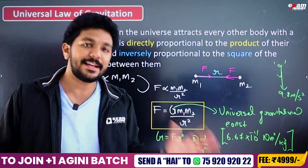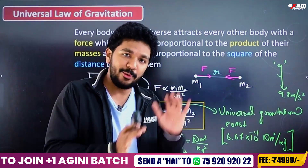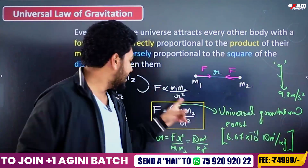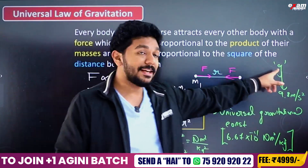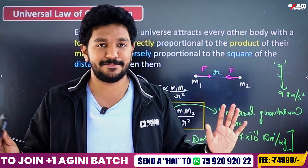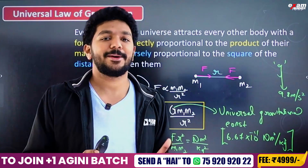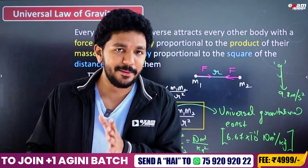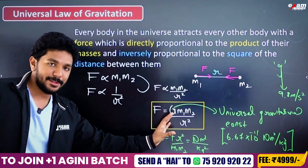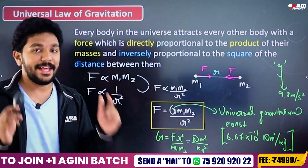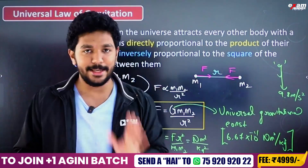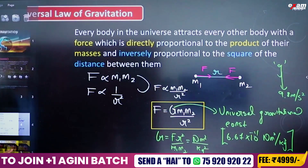The universal gravitational constant G is the same everywhere in the universe — whether you consider the Moon, Jupiter, or any other galaxy, this value remains the same. The main thing to remember is that gravitational force is always attractive, never repulsive.